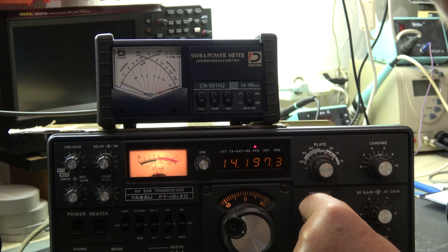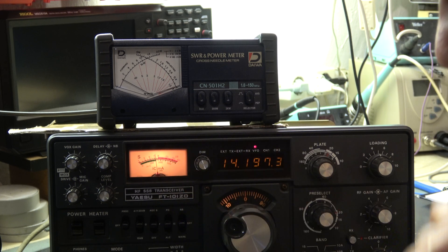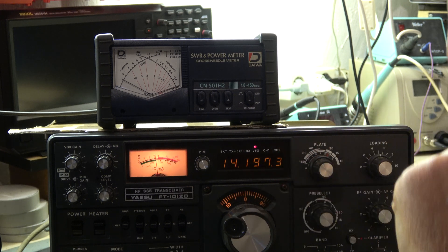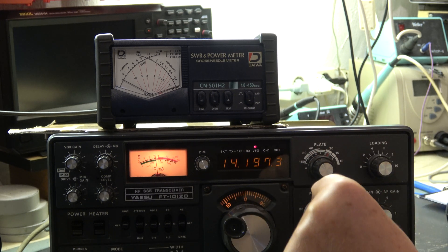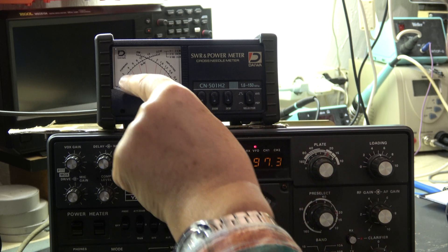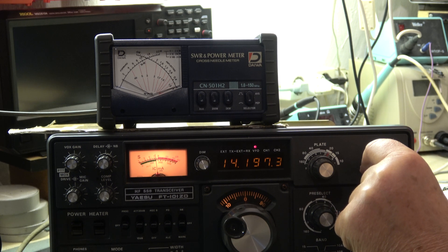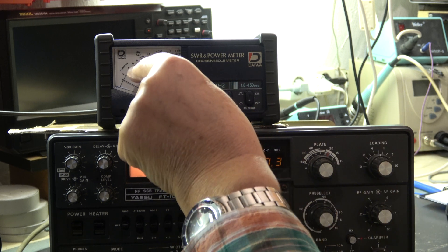Then we use the pre-selector for maximum output. This also causes more current. The circuit is tuned a little bit. When I increase the output with the pre-selector or the driver, we see here we have approximately 10 watts now. And now I use the loading to increase the output. We can see it here.